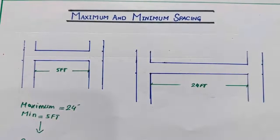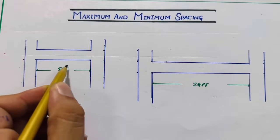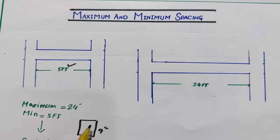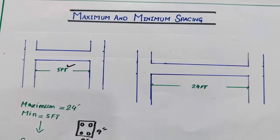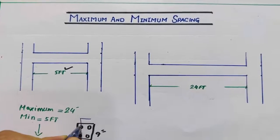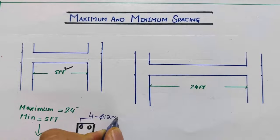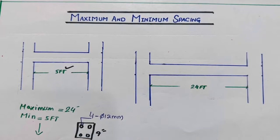If the span between two columns is five feet, what should be the size of the column in that case for G+1 story? The column size should not be more than nine inches by nine inches, with four numbers of steel rods and the diameter should not be less than 12 millimeters — four bars, 12mm diameter. This is the column section as you can see in the plan.